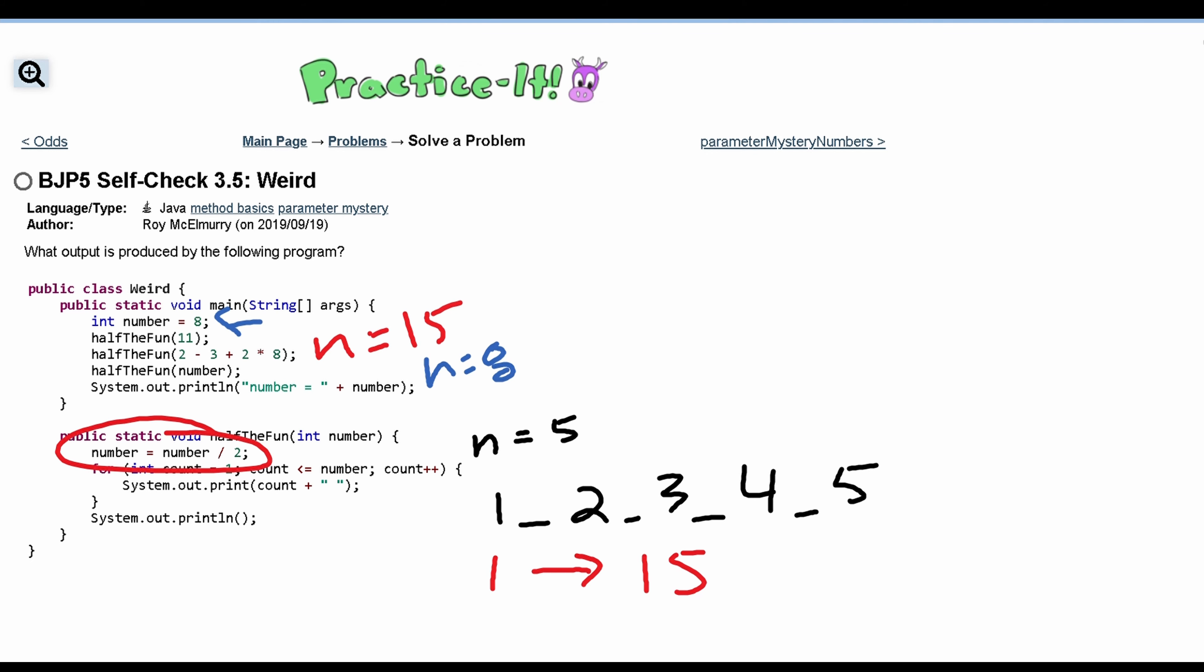I forgot to half it right here. So being cut in half from 15 you have to divide this by 2. This is going to give us 7. So instead of running to 15 right here this is going to run from 1 to 7 and with n equaling 8 it is going to get divided by 2 which is going to give us 4 so this is going to run from 1 to 4 like this.